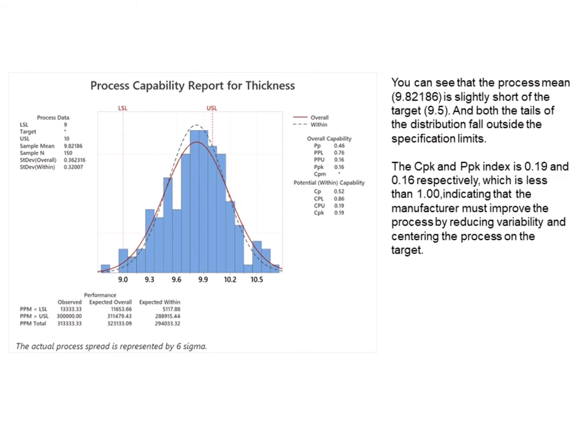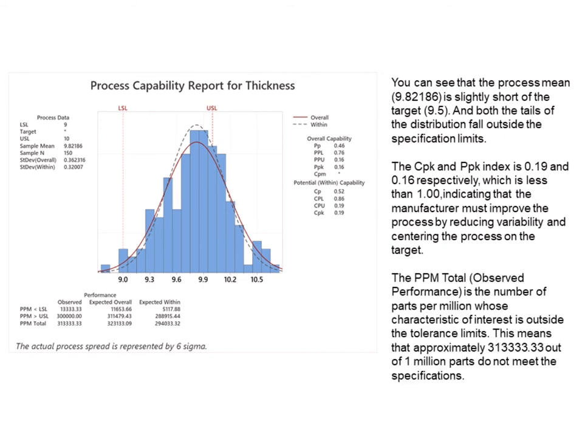This indicates that the manufacturer must improve the process by reducing variability and centering the process on the target. The PPM total — observed performance — is the number of parts per million whose characteristic of interest is outside the tolerance limits. This means that approximately 313,333 out of 1 million parts do not meet the specifications.